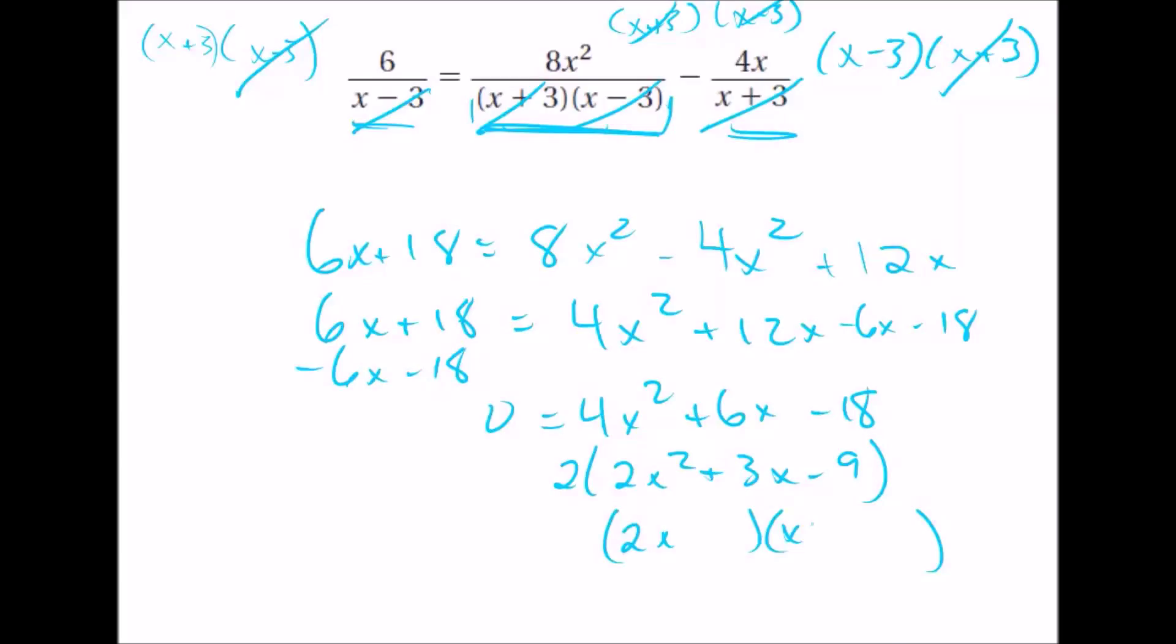Now when I first taught this, I taught the box method, so that's what I'm going to show here. But you can also do a fair amount of guessing and checking to just try to get what you want out of this. Like you want a positive 3 in the middle, and you need a negative 9 on the end. So you're looking for the factors that are going to give positive 3 in the middle and negative 9 on the end. But this is how the box method works.